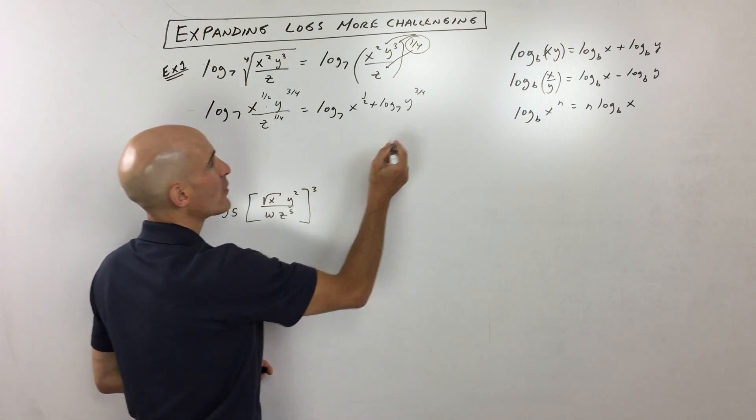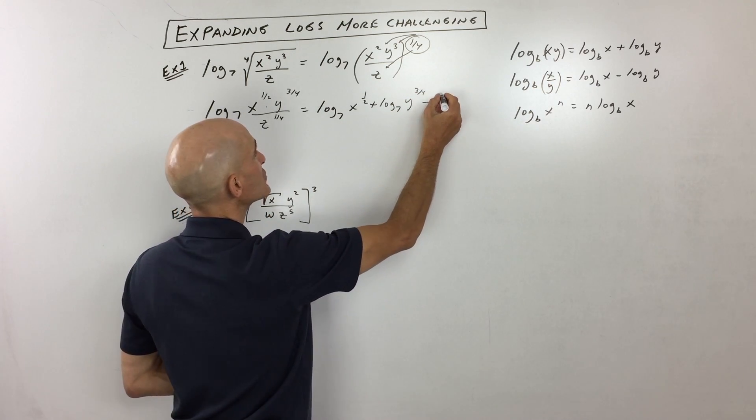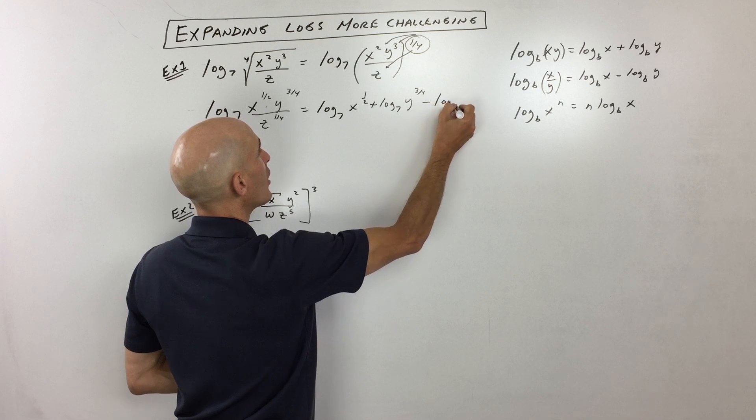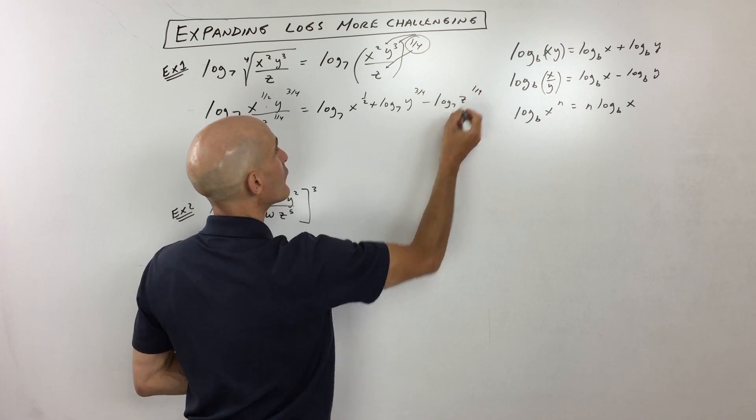And then see how we're dividing by z to the one-fourth? So that's the quotient property. So we're going to be subtracting log base seven of z to the one-fourth.